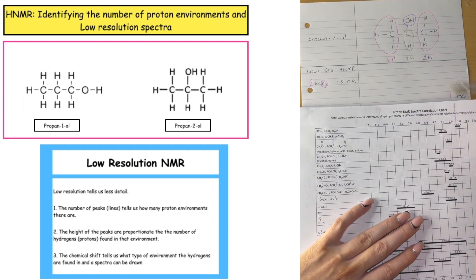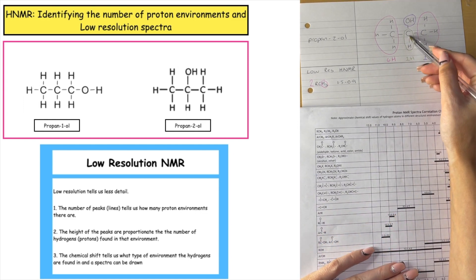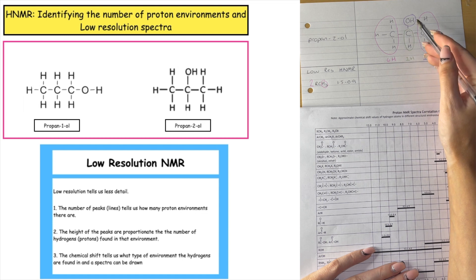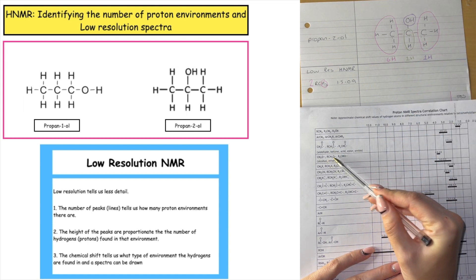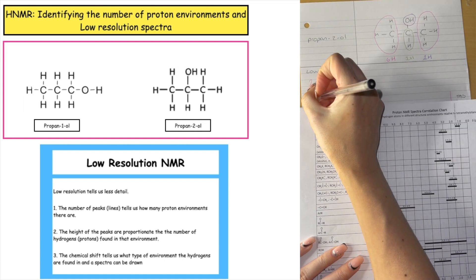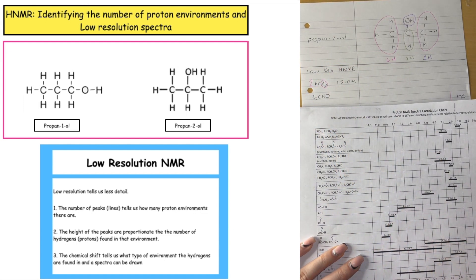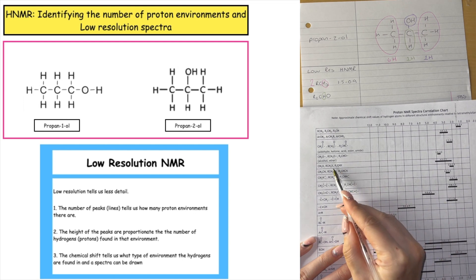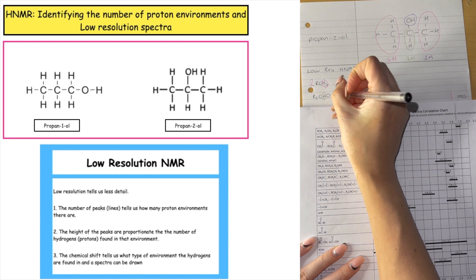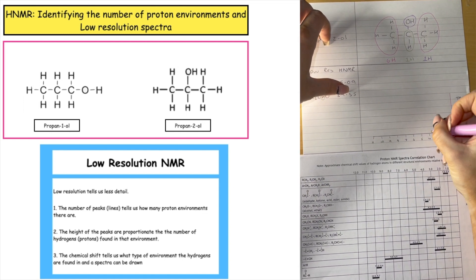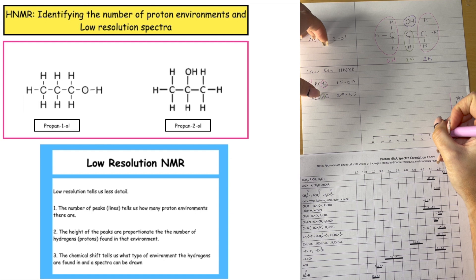The next proton environment is the central CH — bonded to two carbons (R, R) and an oxygen (O). So we're looking for R2CHO in the data booklet, where the H bonded to the carbon is in bold. The chemical shift is 3.9 to 3.5. Plotting at 3.5, it has a height of 1, as there is only one hydrogen atom in that environment.